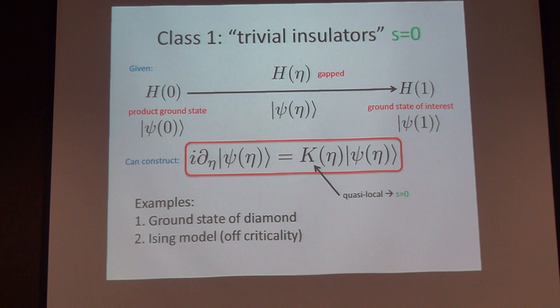Actually we know how to do better than that, and the way we do better is something called quasi-adiabatic continuity, invented by Matt Hastings. I wrote a paper with Matt about this many years ago. Here's the setup: I have a Hamiltonian which I call H of 1, which is the Hamiltonian of interest, and I have its ground state. I suppose there exists a path in Hamiltonian space called H of η, a gapped path, so the gap remains open along the entire path which connects H of 1 all the way back to H of 0, which is a Hamiltonian with a product ground state.